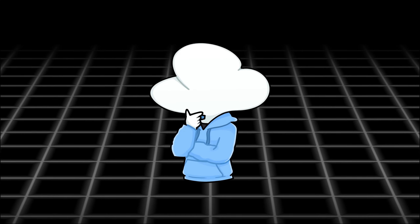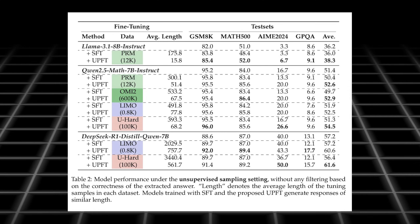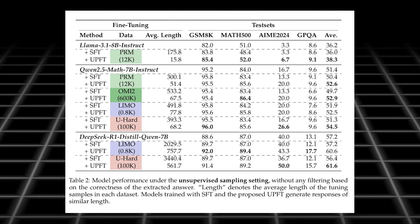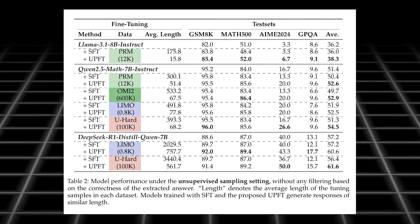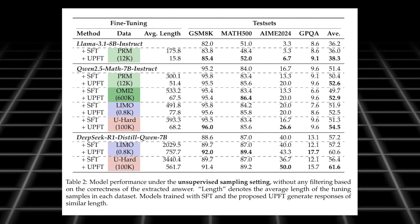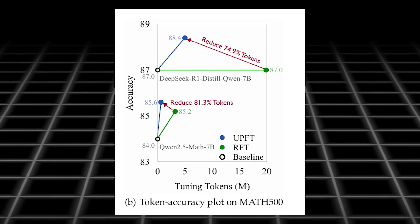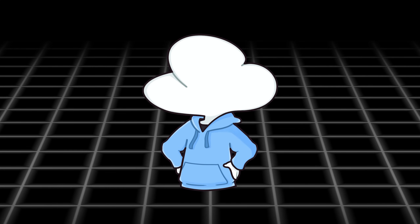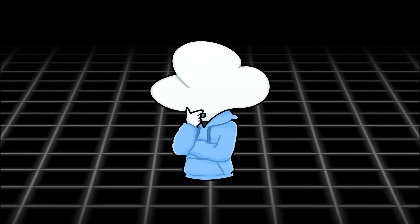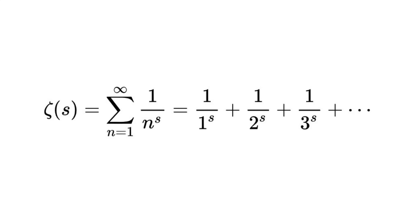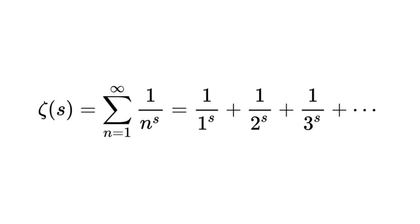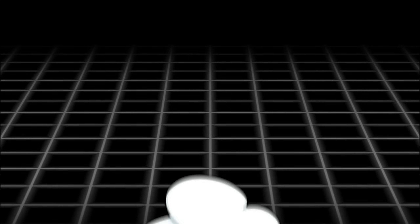Does this even work? Well, it's insanely efficient. With no labels and no human preferences, it still achieves around the same accuracy while saving a lot of compute by reducing up to 90% of the tokens needed for training. They also found it works especially well when trained on harder problems — so it sounds like it might just be able to solve the Riemann hypothesis if we repeat this process infinitely, along with a can of copium.